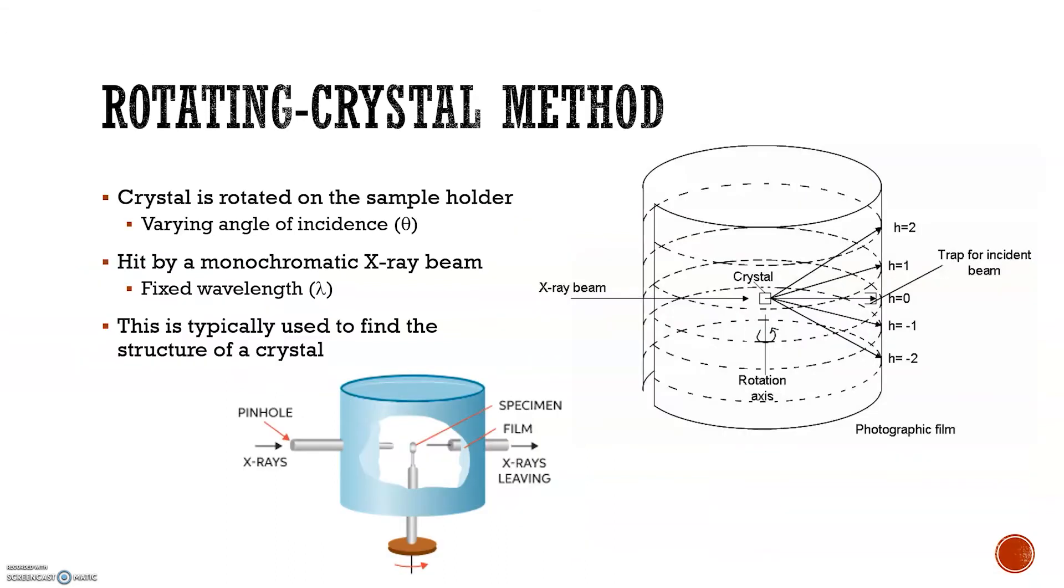In the rotating crystal method, the crystal is mounted to the sample holder and rotated normal through a monochromatic X-ray beam. The film is placed around the crystal in a cylinder. As the crystal rotates, eventually the incident X-rays will produce the correct Bragg angle, and a diffracted beam will be formed making a point on the film.